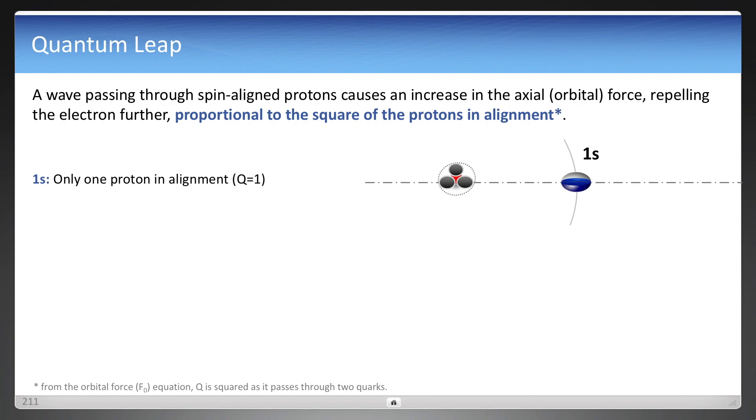Now in hydrogen, there's one proton. In helium, there are two protons, but they're of opposite spin. They're not aligned. That electron is still in 1s.